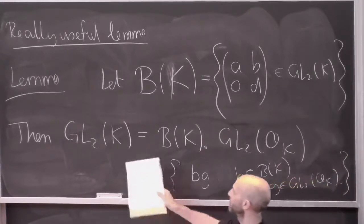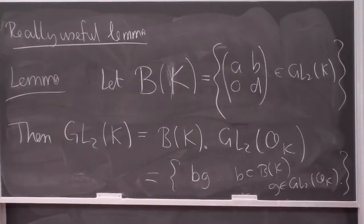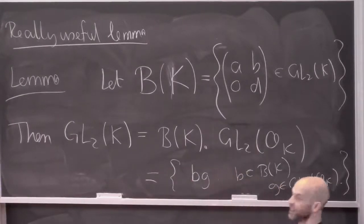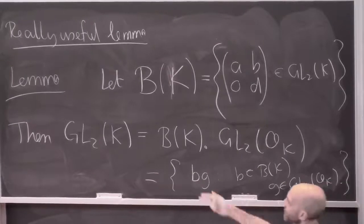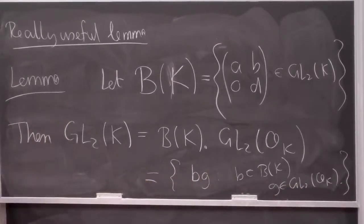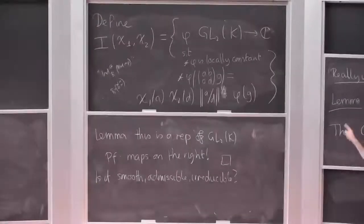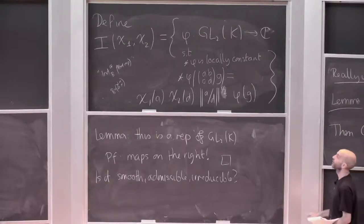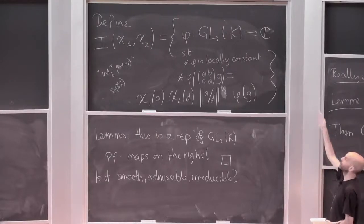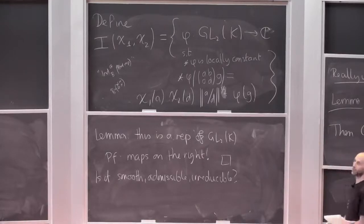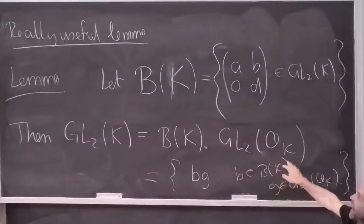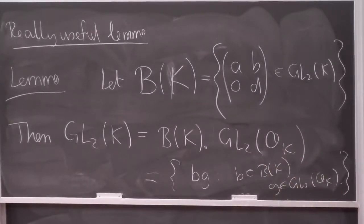I'm saying that every two-by-two matrix is an upper triangular matrix times a matrix with integer entries. This is nice to know because if I've got a locally constant function on a compact set like GL₂(O_K), then it's only going to take finitely many values, since it's locally constant and certainly continuous — with the discrete topology on C, these maps are locally constant, or equivalently continuous if I put the discrete topology on C and the usual p-adic topology on GL₂(K).